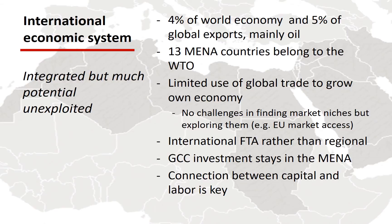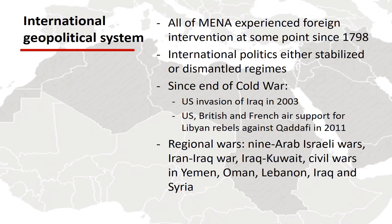The geopolitical system is probably the most significant impact of international relations on the MENA. International support is a compelling explanation for the durability, if not the origin, of authoritarianism in the Middle East. Pretty much since Napoleon's conquest of Egypt in 1798, it has been European powers and the United States intervening in the Middle East. Except for northern Yemen and Western Arabia, pretty much every part of the Middle East was under European military control at some point in the 20th century.